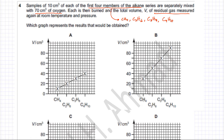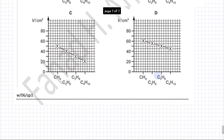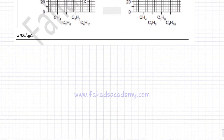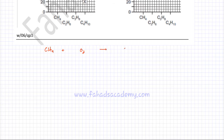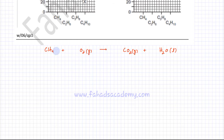Each of the first four alkanes are being reacted with 70 cm³ of oxygen. The first thing we need to do is construct equations. For CH4 reacting with O2, it produces CO2 and H2O. Since volumes are measured at room temperature, H2O is a liquid and won't be measured. We need to balance the equation: CH4 + 2O2 → CO2 + 2H2O.